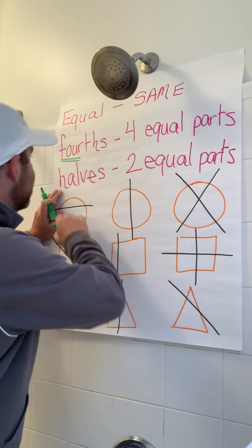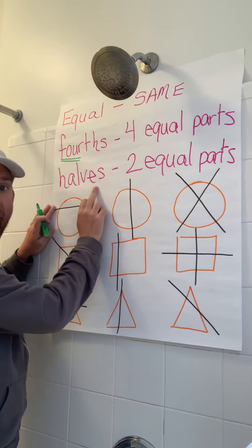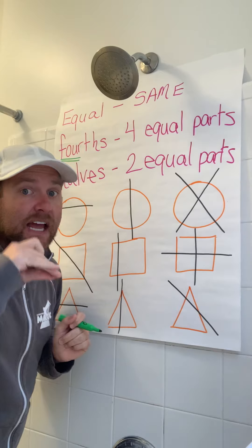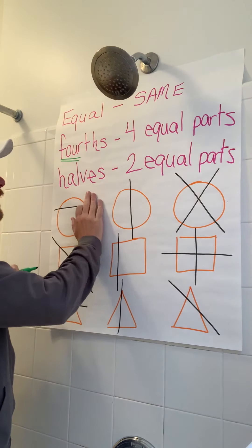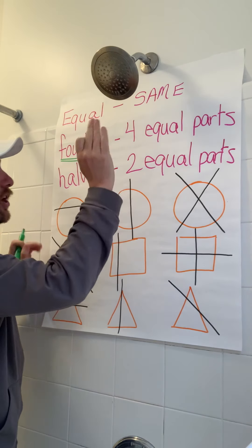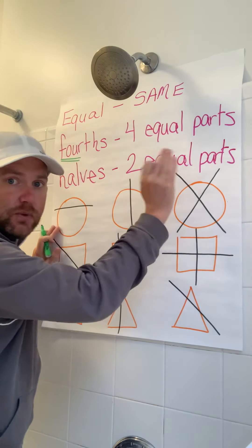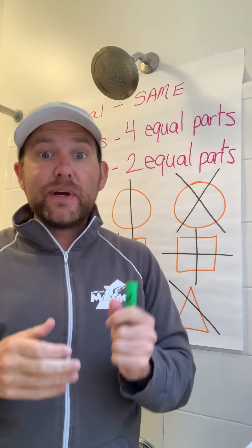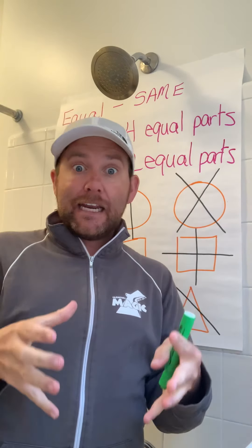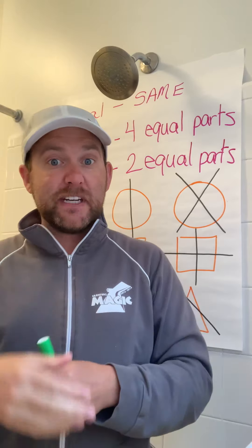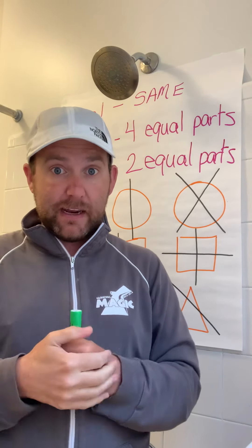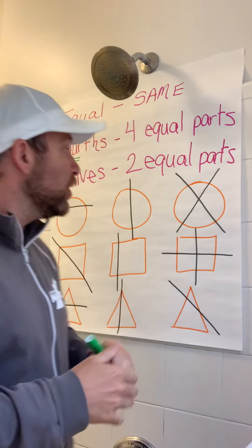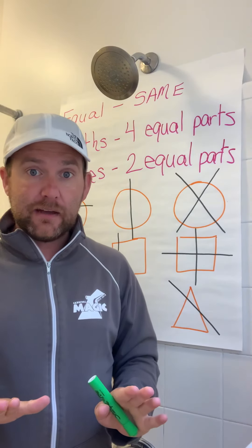The next word is halves. Everyone say halves. Halves means that there are two equal parts. Halves are going to be bigger sections than fourths, and I'm going to show you that. Let's review our 2D shapes.